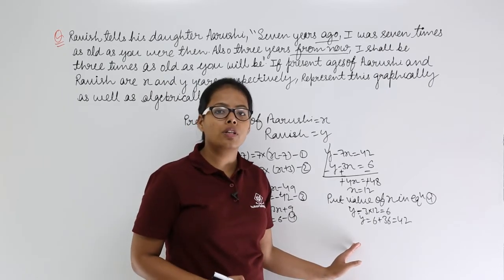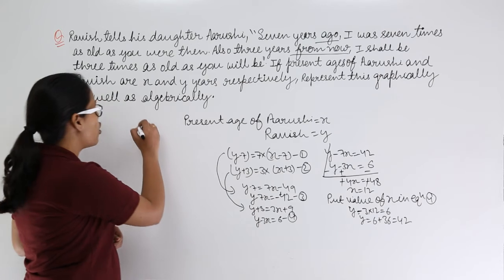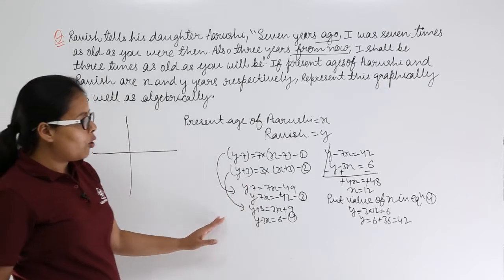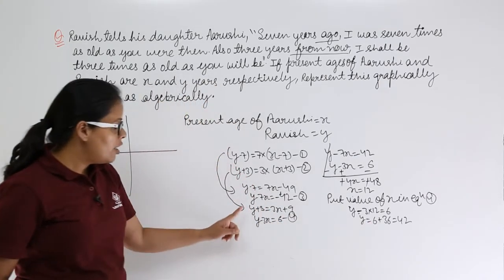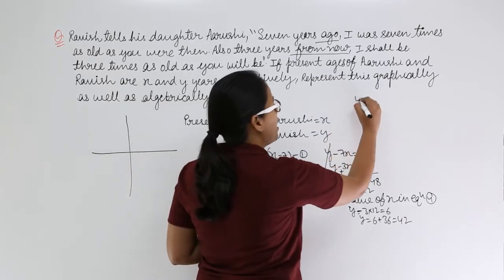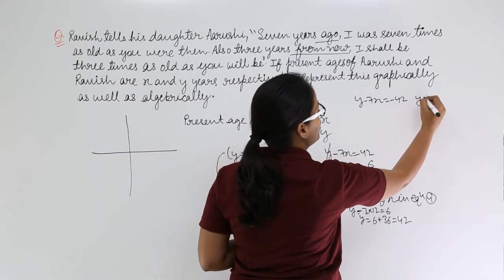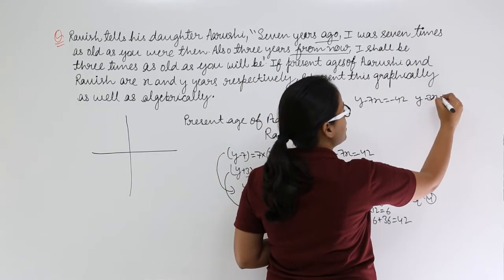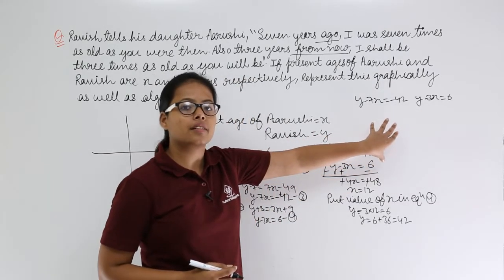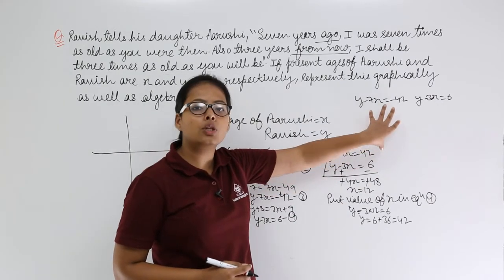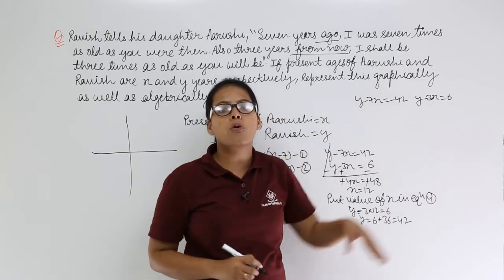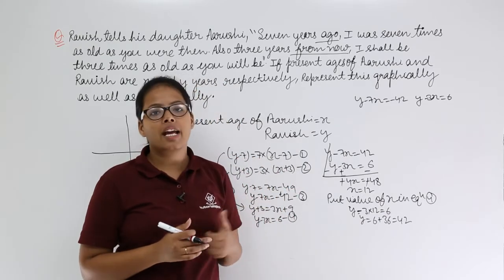Now you need to find the algebraic form — those are equations three and four. Let's now draw a graph for these in a Cartesian plane. We already found the intersection point at (12, 42). To draw each line, we need to find two points for each equation so that we can join them and plot the lines.